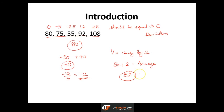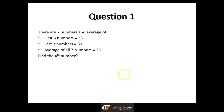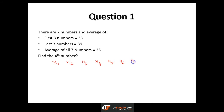If you have any doubts, please send us an email or write a comment under this video. You can send an email to info at yourfaculty.com and we will respond within a day. Now let's move on to the next question. There are 7 numbers: N1, N2, N3, N4, N5, N6, N7. The average of the first 3 numbers is 33, the last 3 numbers is 39, and the average of all 7 numbers is 35.